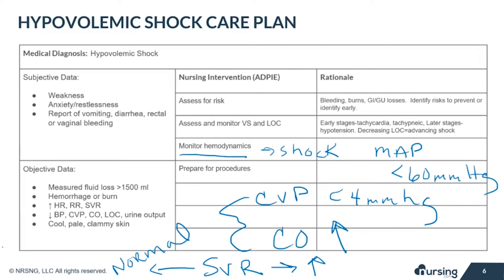With hypovolemic shock, we may need to prepare the patient for certain procedures like an arterial line or central line placement for invasive hemodynamic monitoring, intubation if there's a decrease in consciousness to protect the patient's airway, or a trip to the OR to repair internal bleeding. Be sure consent is obtained by the provider, explain the procedure to the patient and family, follow facility procedures, gather necessary supplies, prep lines and tubing, and remove patient belongings like clothes and jewelry if they're going to the OR.